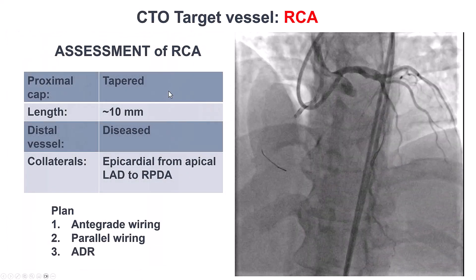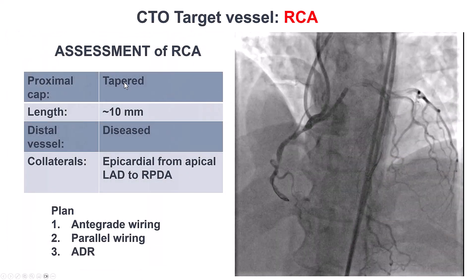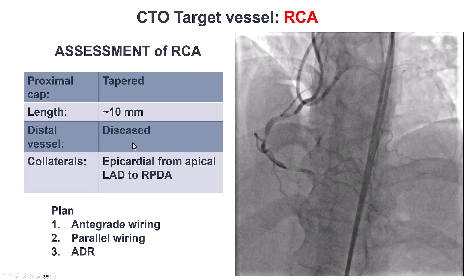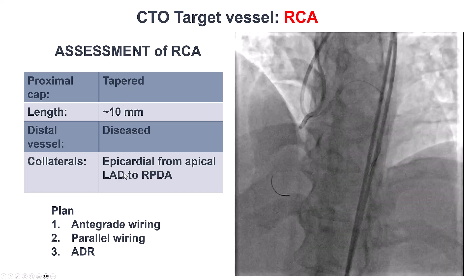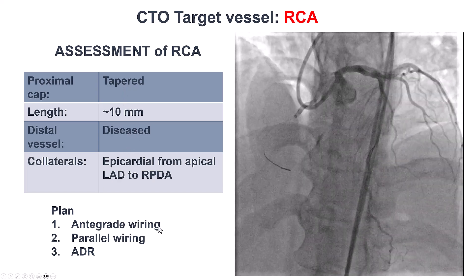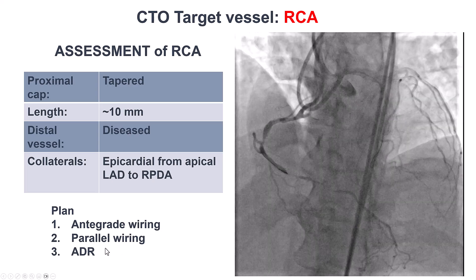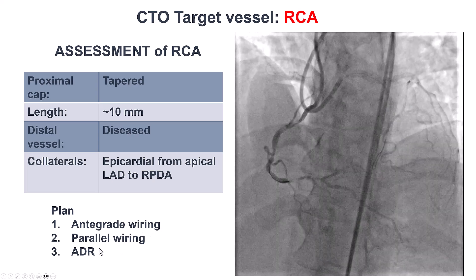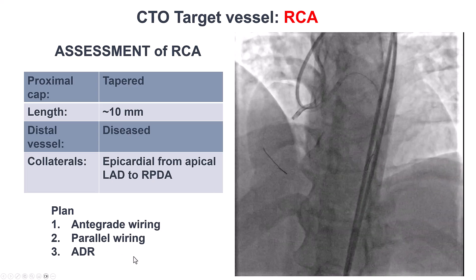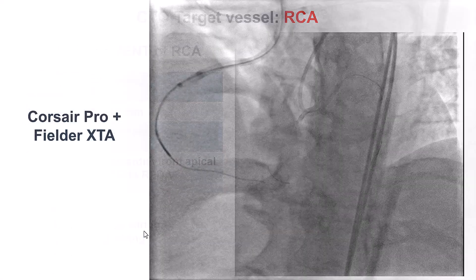Based on the favorable characteristics — the tapered entry and the relatively short length — we decided to go with antegrade wiring first, followed by parallel wiring and antegrade dissection reentry if the initial approach failed to be successful.